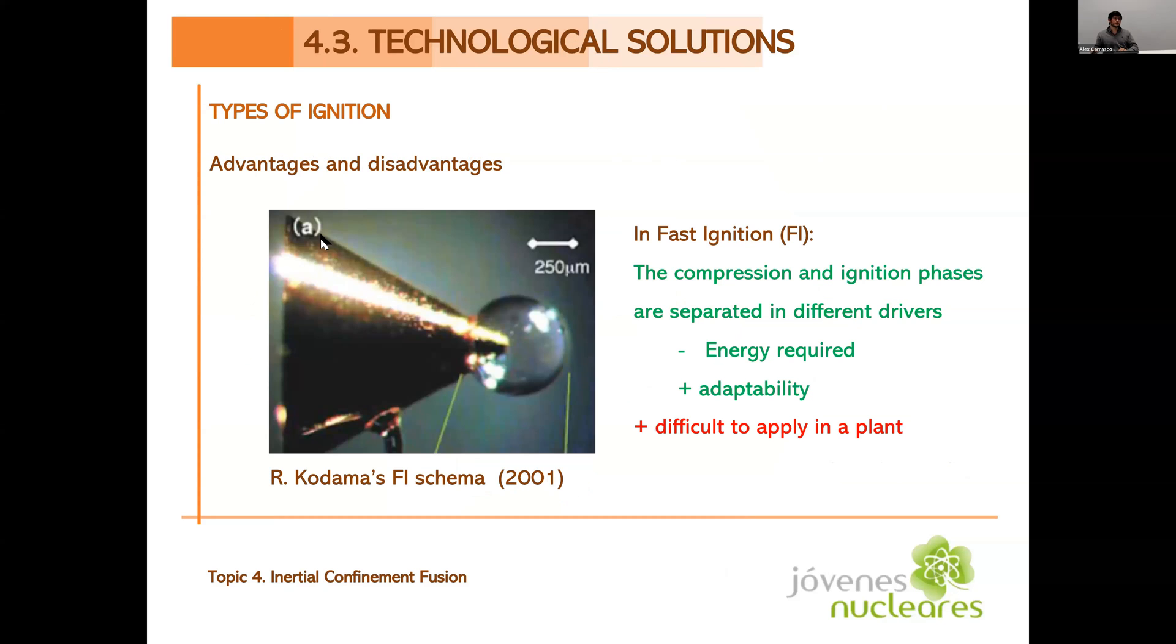The concept of a fast ignition that we see here is a gold cylinder that protects the second laser that will enter the capsule producing fast ignition. So the advantages of a fast ignition is that the compression and ignition phases are separated in different drivers. This means that we need less energy and it gives us more adaptability because each laser can be more efficient for its own phase, for each of the phases. One laser will compress the other will ignite. So each laser pulse will be tailored to the needs of each of those phases. Whereas in the central ignition, we only have one laser. So we can't have this adaptability, but it is also more difficult to apply in a plant because this is more difficult to manufacture.